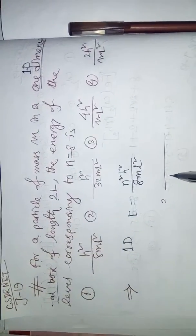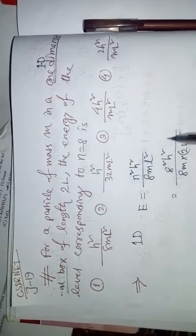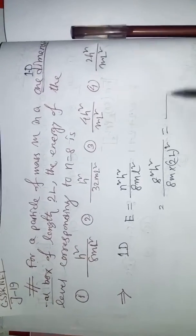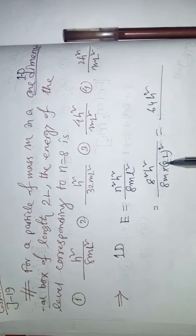8m, L value is 2 capital L whole square, right? And n will be 8. Then 8 square h square. So after that, 8 square is 64 and here the 2 square, first of all write like this: 4L square.